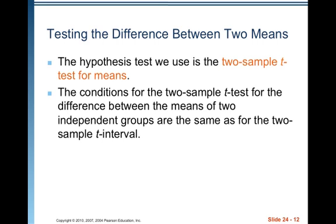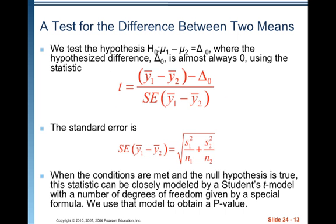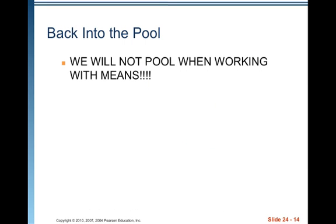Let's talk about testing the difference between two means. The hypothesis test we use is the two-sample t test for means. The conditions are the same as for the two-sample t interval. We test H₀: mu1 minus mu2 equals delta-naught, where the hypothesized difference delta-naught is almost always zero, using the statistic t equals the difference in sample means minus the hypothesized difference divided by the standard error of the sample means. When conditions are met and the null is true, this statistic is modeled by Student's t with degrees of freedom from a special formula, and we use the model to obtain a p-value. We will not pool when working with means — we don't want to assume the variances are the same.